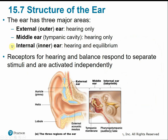Looking at the structure of the ear. The outer ear has three major areas: the external outer ear and the middle ear tympanic cavity, both just for hearing, and the internal inner ear, which involves both hearing and balance. Receptors for hearing and balance are in the inner ear but respond to separate stimuli and function independently.